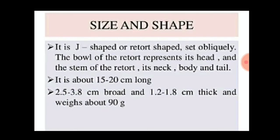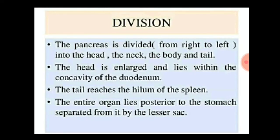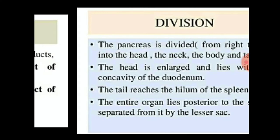The pancreas is divided from left to right into the head, the neck, the body, and the tail. The head is enlarged and lies within the concavity of the duodenum. The tail reaches the hilum of the spleen. The entire organ lies posterior to the stomach, separated from it by the lesser sac.